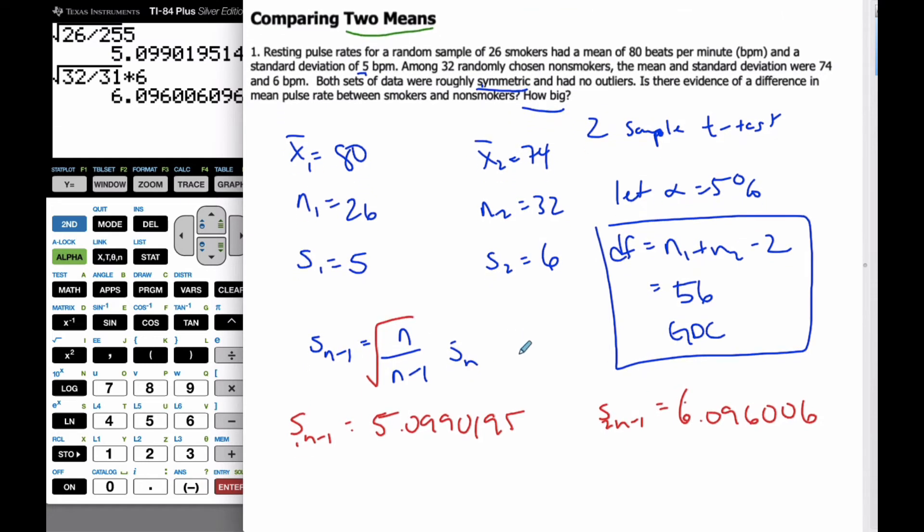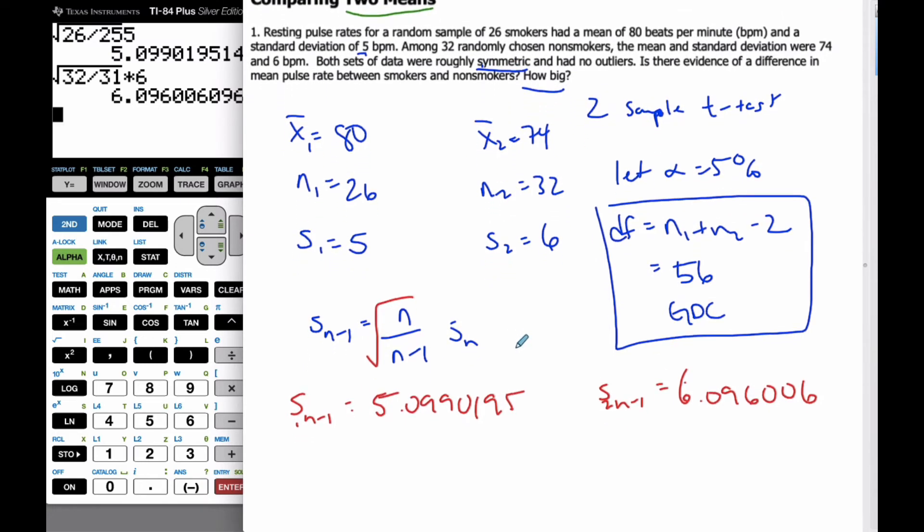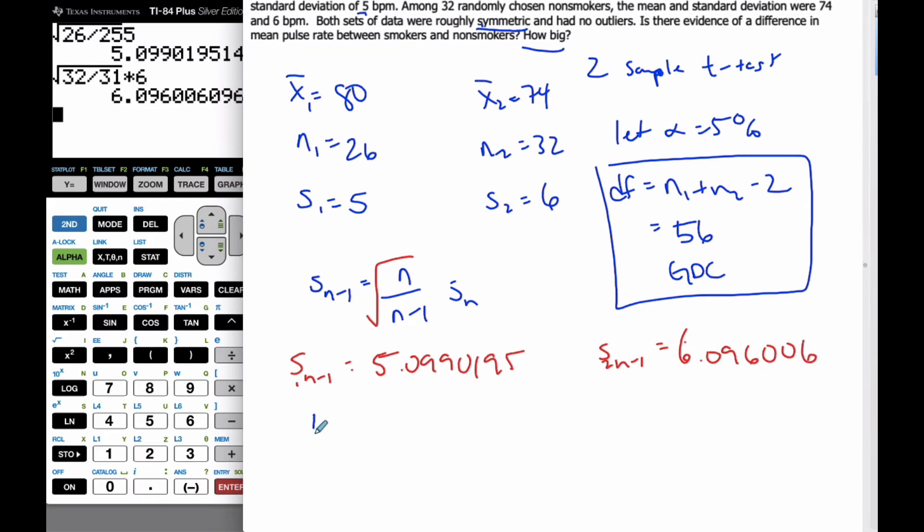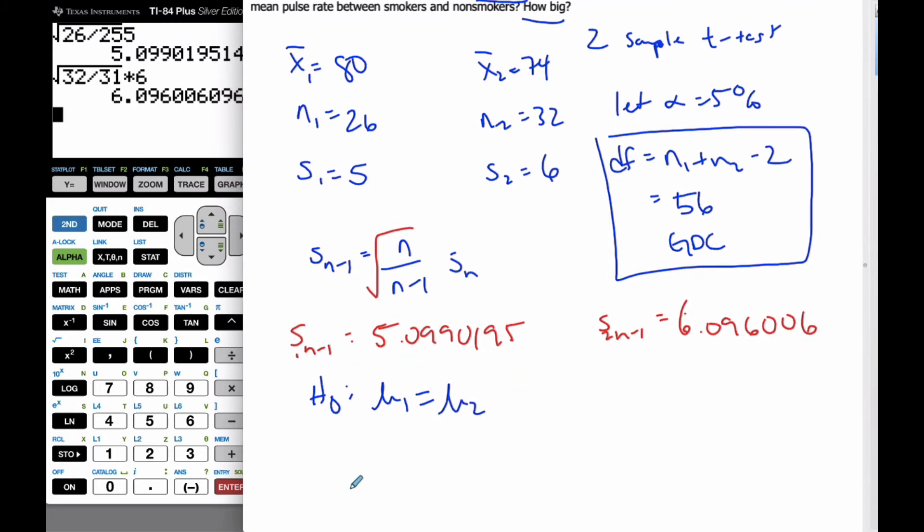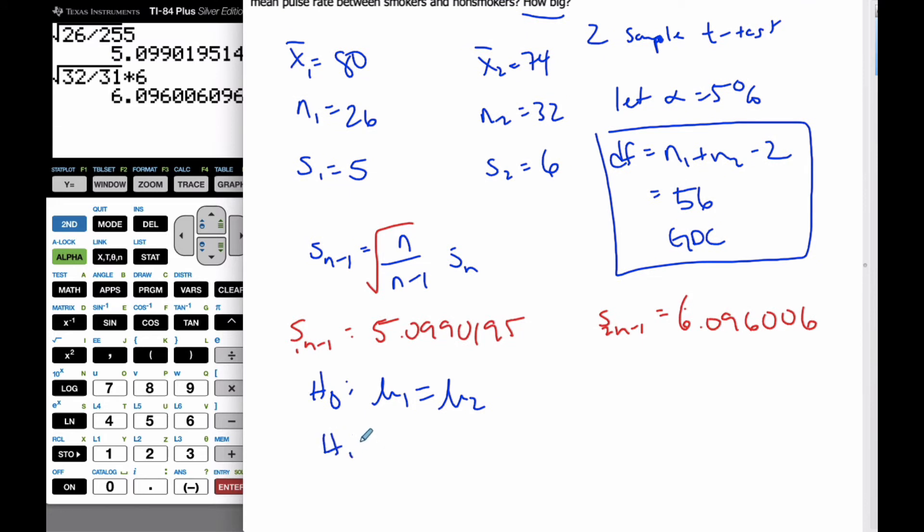So I have all the numbers I need and I can carry out my hypothesis test. The hypothesis is that mu 1 equals mu 2. That's always our null hypothesis, that there's no difference between the two. Our alternative hypothesis is going to be that there is a difference between the two.